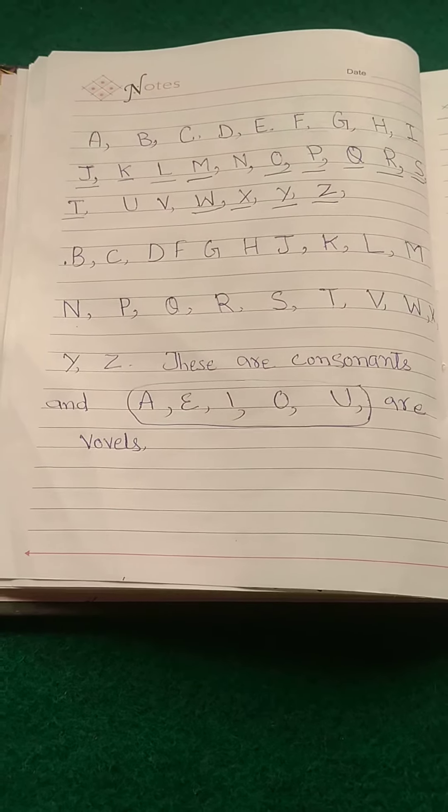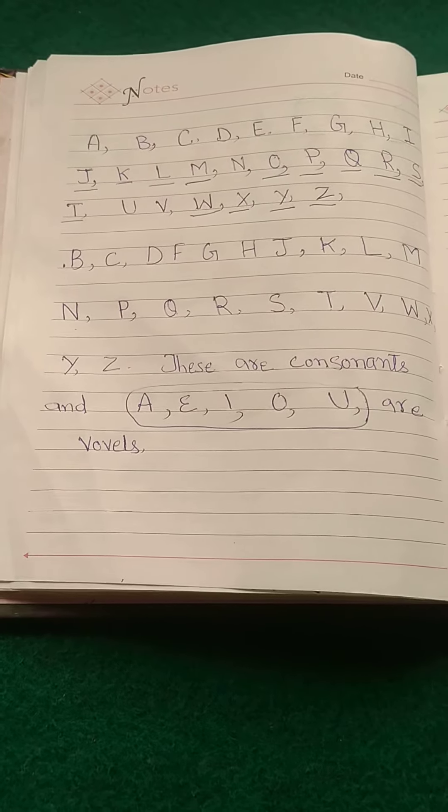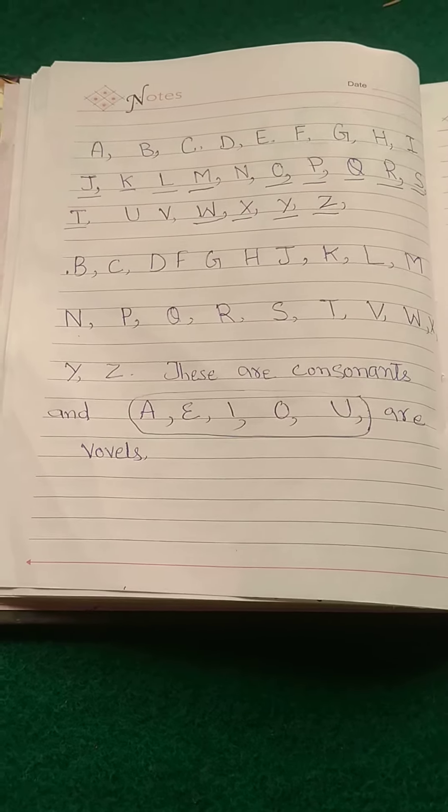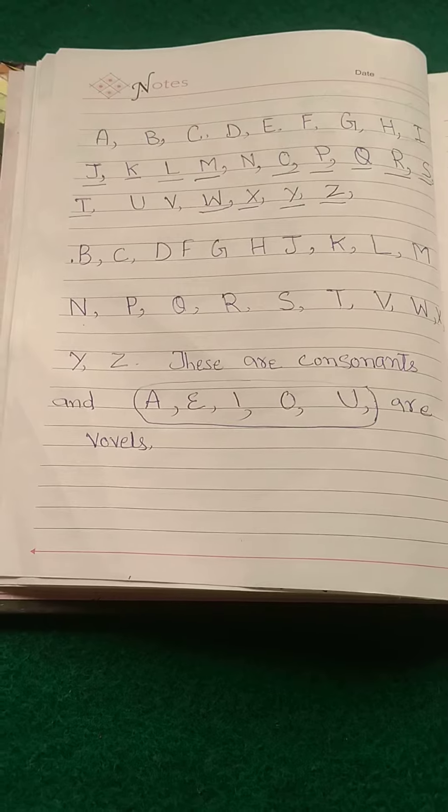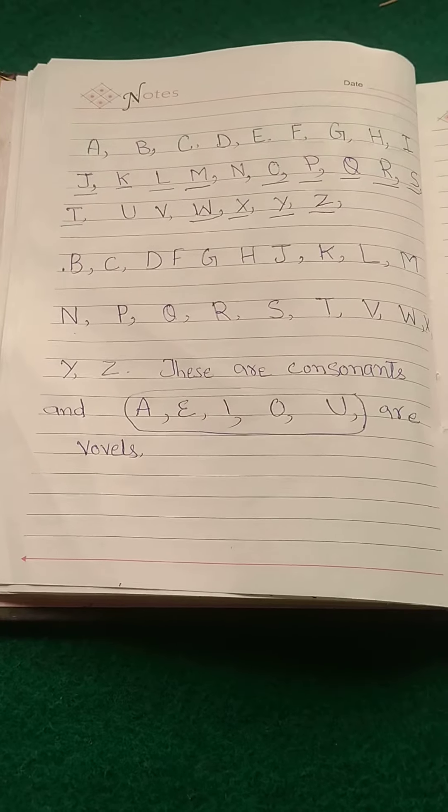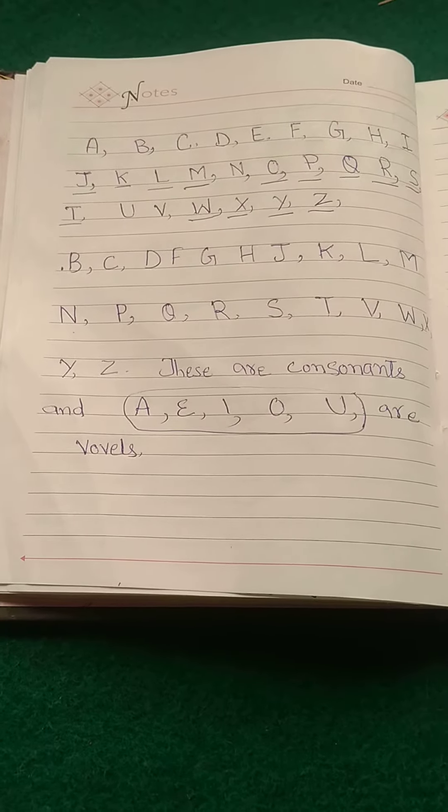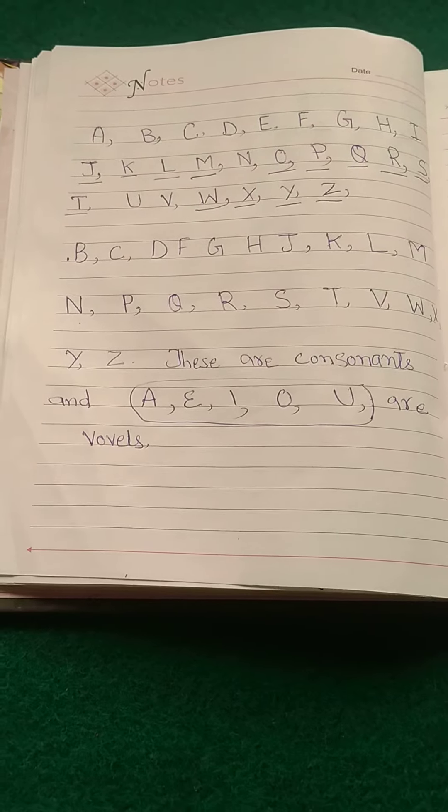Dear students, there are 26 alphabets in English, in which 21 alphabets are called as consonants, and 5 alphabets are called as vowels.